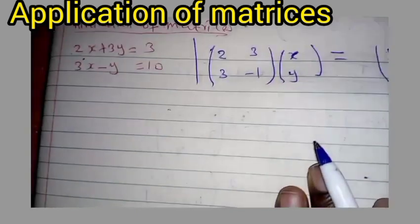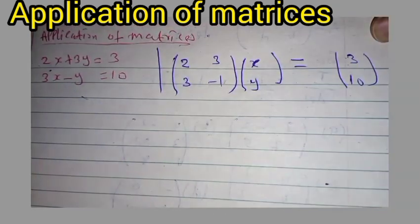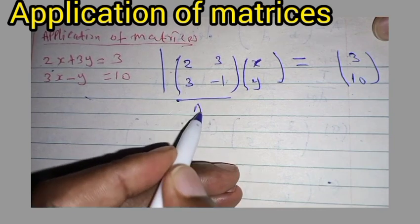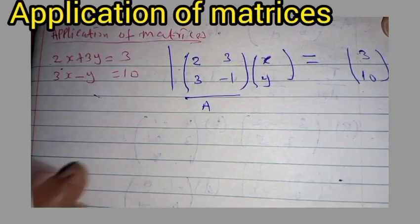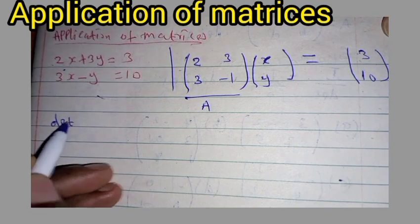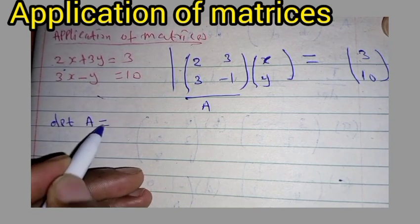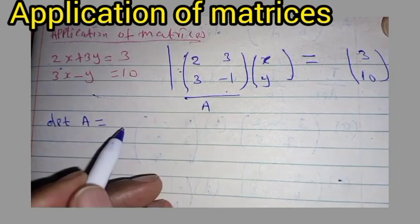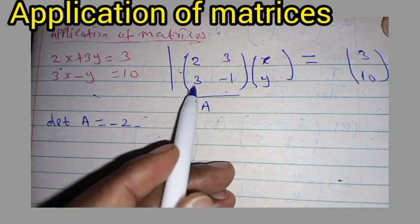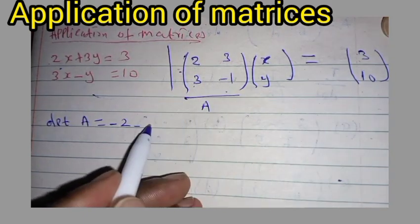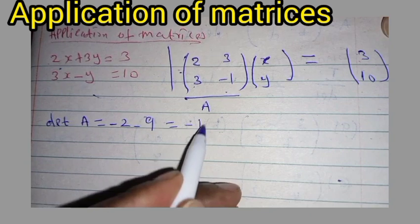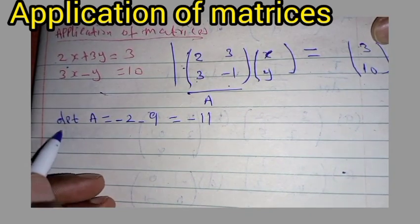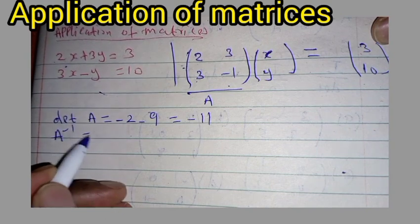Once you have written the simultaneous equation in matrix form, you can call this matrix A. You get the determinant of A, which is given by the product of the leading diagonal: 2 times negative 1 gives negative 2, minus 3 times 3 gives negative 9. This gives you negative 11.